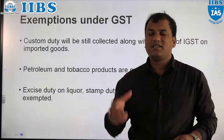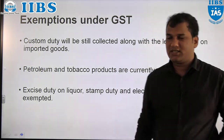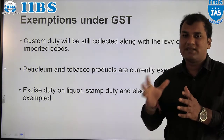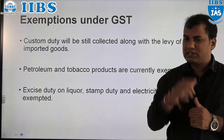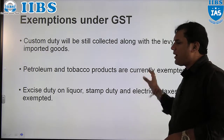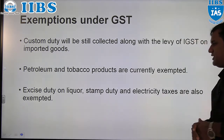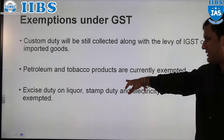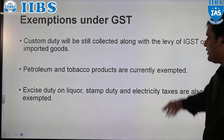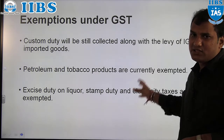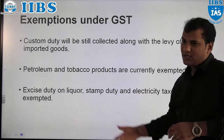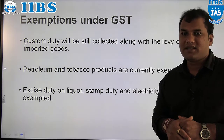There are certain goods and services exempted from GST. At present, custom duty is imposed by the central government along with IGST on imported goods. Apart from that, petrol and petroleum products, tobacco and tobacco products are also exempted from GST. Excise duty on liquor, stamp duty, paper stamp duty, and electricity tax are also currently exempted from GST. This is all about the 101st Constitutional Amendment Act — that is GST, Goods and Service Tax.